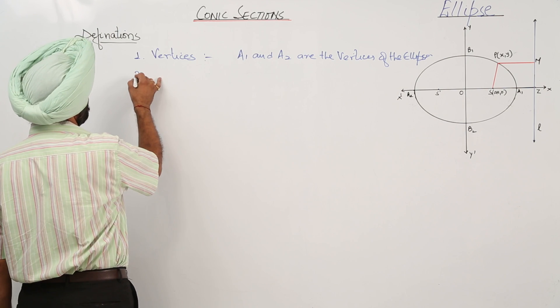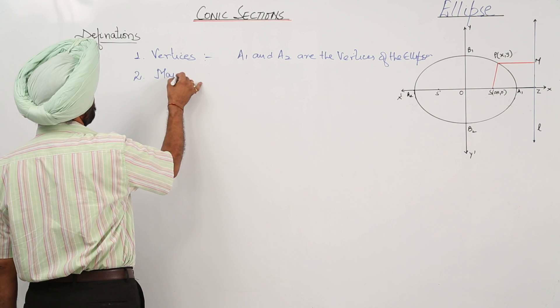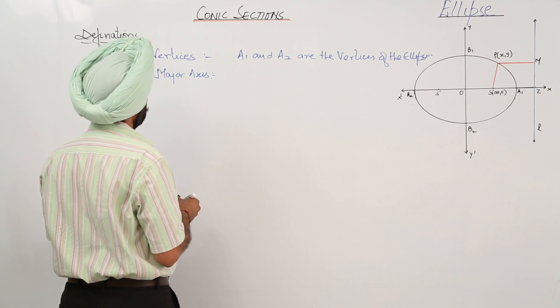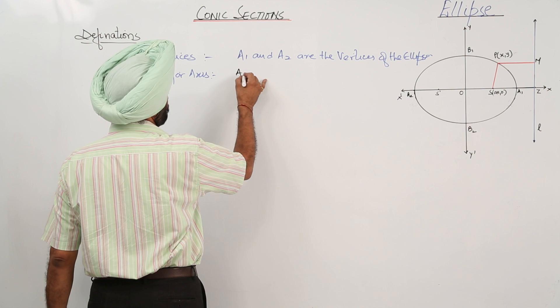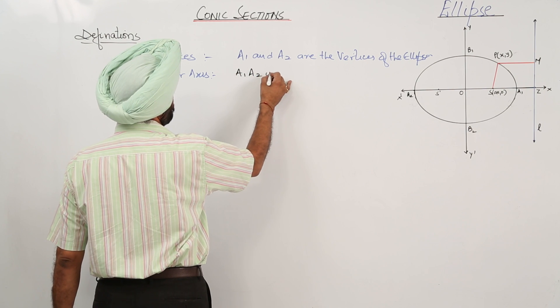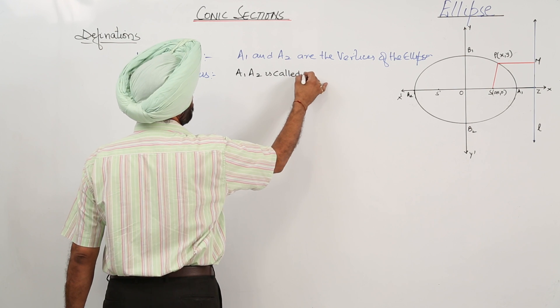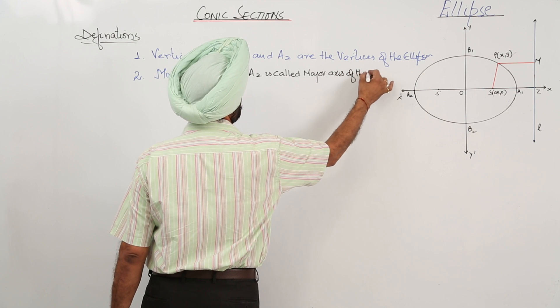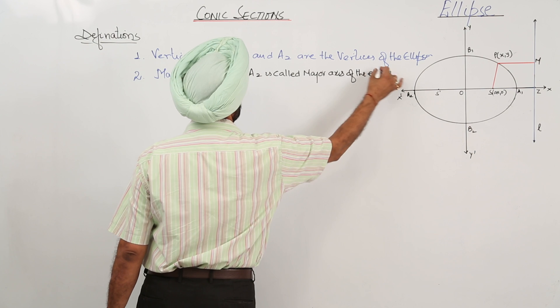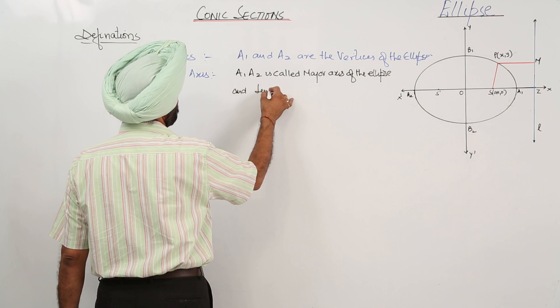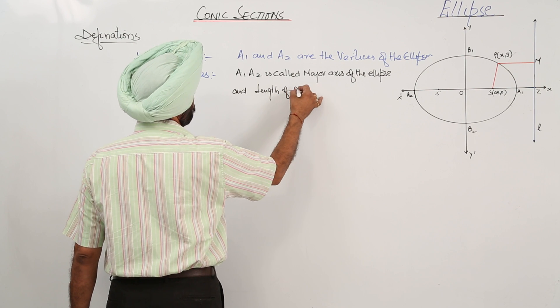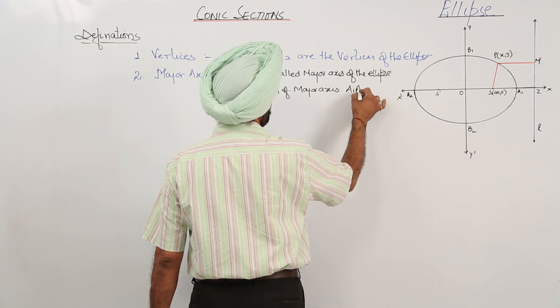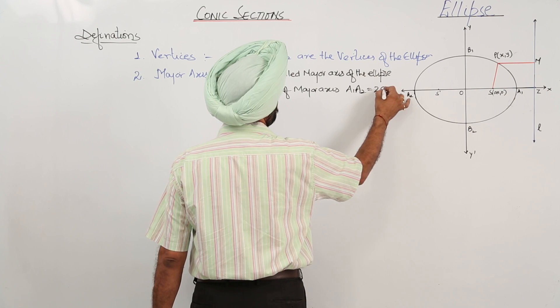Number 2, major axis. A1, A2 is called major axis of the ellipse and length of major axis A1, A2 is equal to twice of a.